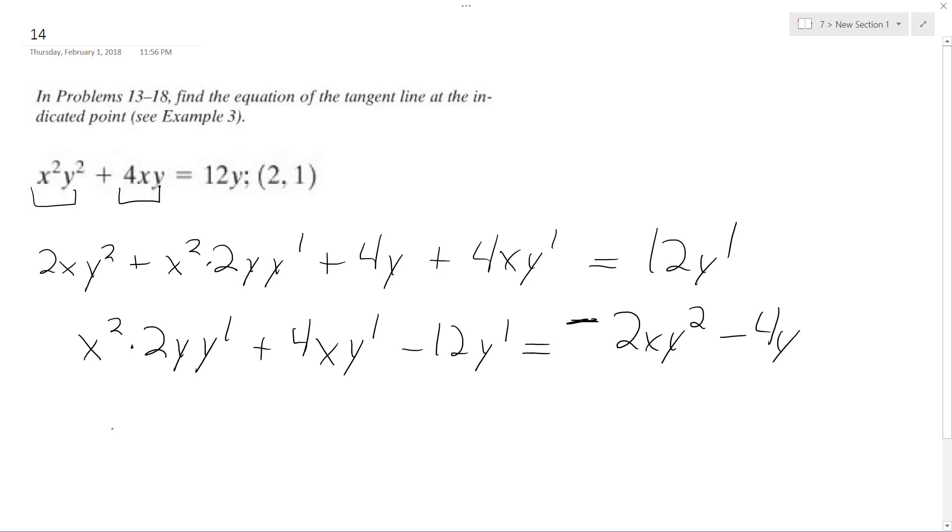So we end up with is y prime or dy dx is equal to negative 2xy squared minus 4y all over x squared 2y plus 4x minus 12.